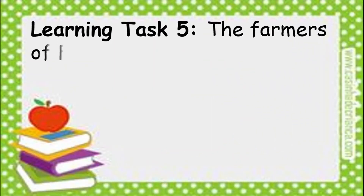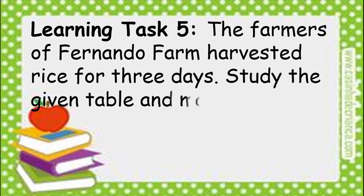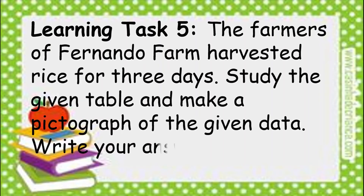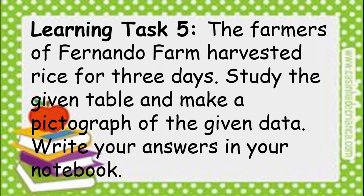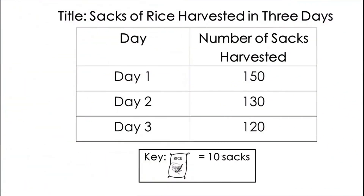For learning task number 5, the farmers of Fernando Farm harvested rice for 3 days. Study the given table and make a pictograph of the given data. Write your answers in your notebook. The table shows sacks of rice harvested in 3 days: day 1 — 150, day 2 — 130, and day 3 — 120. The key is 1 sack picture equals 10 sacks.